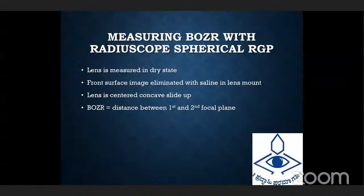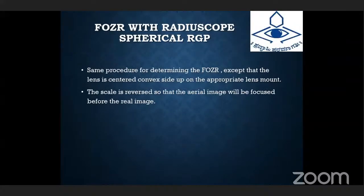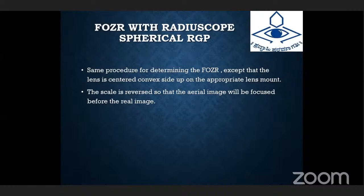For measuring the back optic zone radius (BOZR) with a radius scope of a spherical RGP lens: the lens should be in a dry state with the front surface down, mounted concave side up on the holder. The BOZR of a spherical RGP equals the distance between the first and second focal plane. For measuring the front optic zone radius (FOZR), the same procedure is used except that the lens is centered convex side up on the appropriate lens holder. For BOZR the lens is concave side up; for FOZR the lens is placed convex side up. The scale is reversed compared to BOZR, and the aerial image will be focused before the real image.